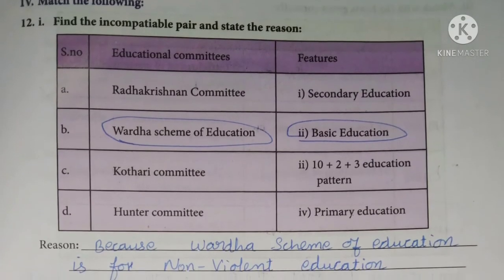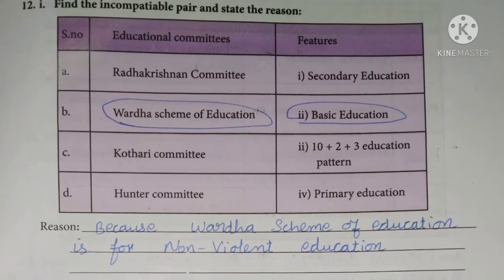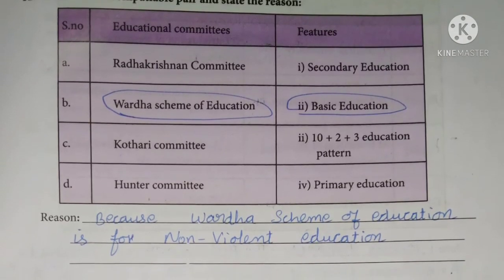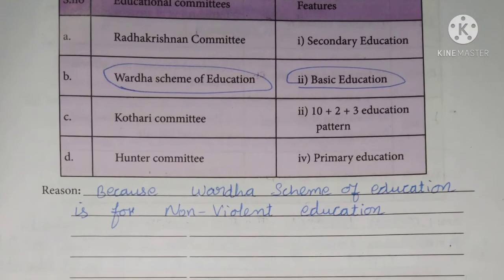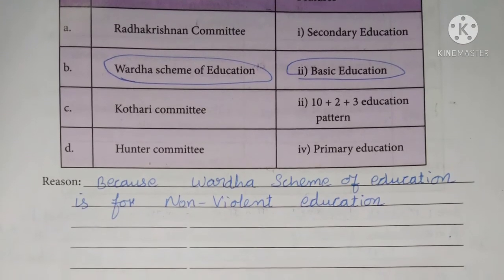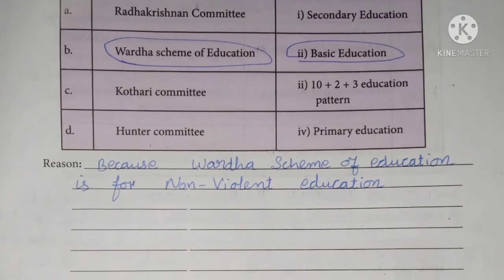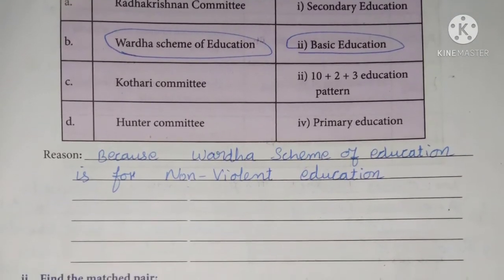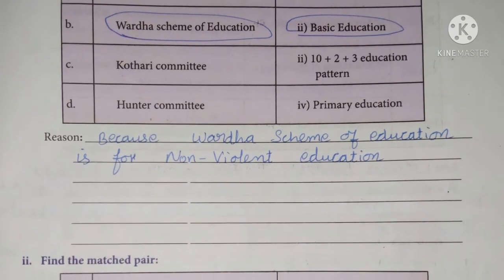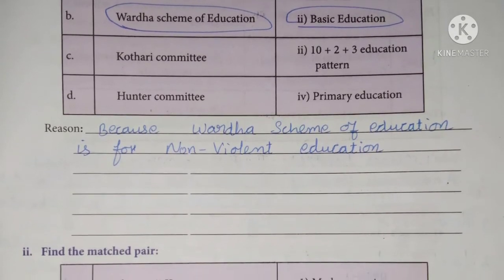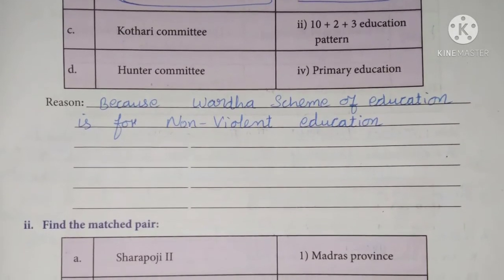Next question: Find out the incompatible pair and state the reason. The Wardha scheme of education paired with basic education is a wrong pair, because the Wardha scheme of education is for non-violent education.